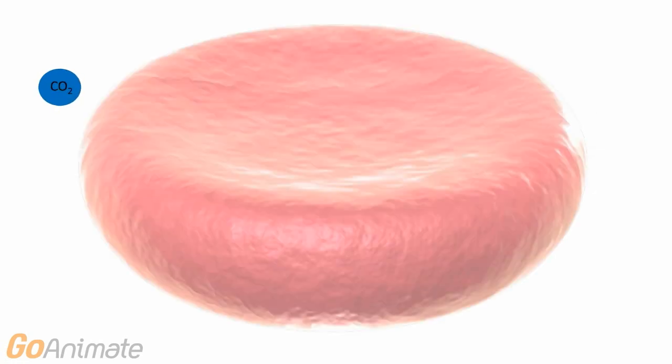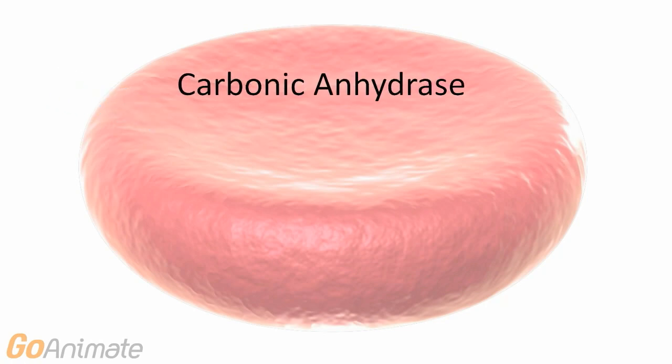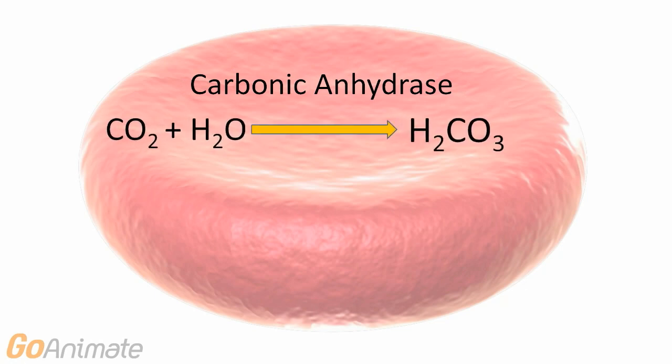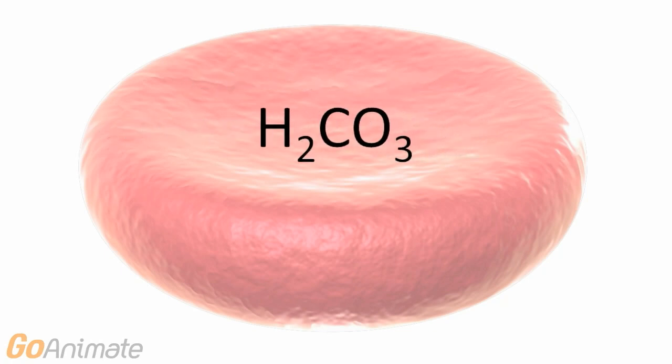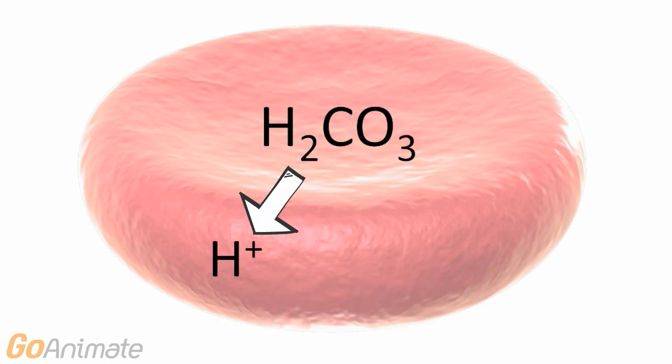Here's how it works. Carbon dioxide diffuses into the red blood cell. Once inside, it combines with water and an enzyme called carbonic anhydrase to form carbonic acid. Since the carbonic acid is ionically bonded, it dissociates into hydrogen ions and bicarbonate ions.